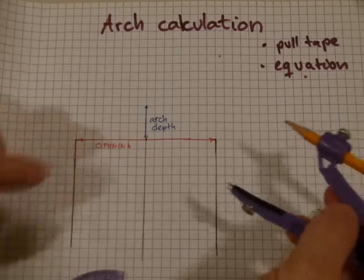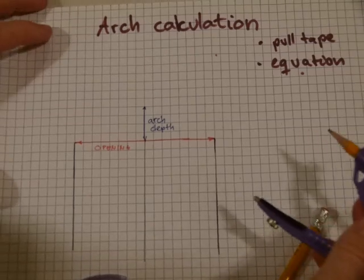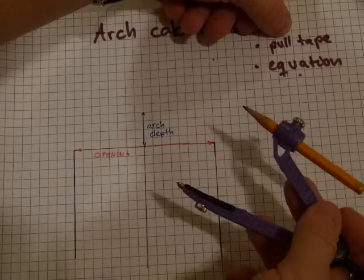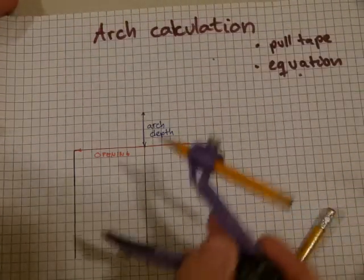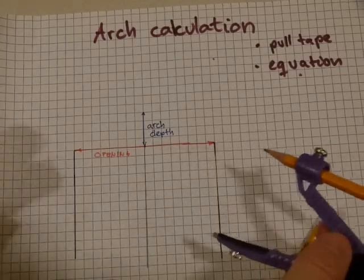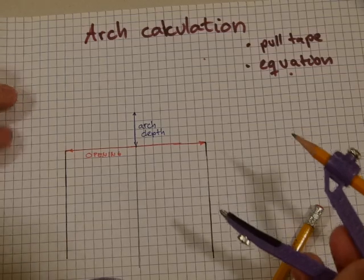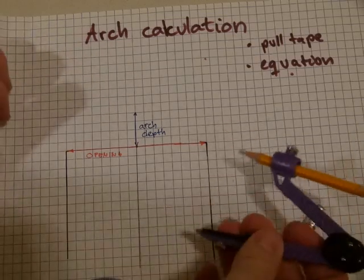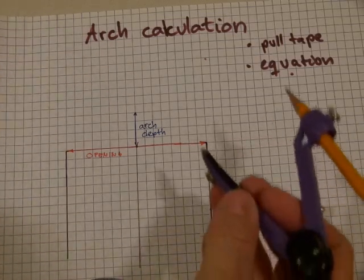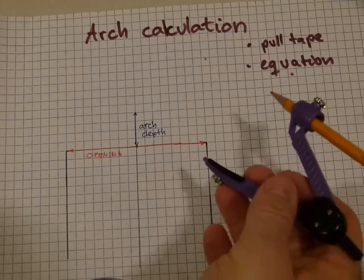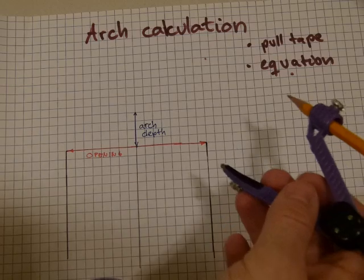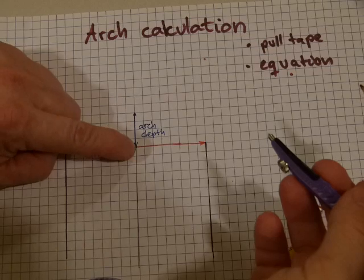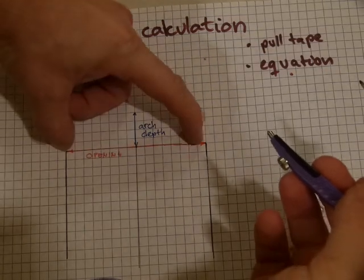The circle will be somewhere on it, and I'll show you two ways to find it. One is by pulling the tape, which I'm going to illustrate with this compass. Then I have a setup to show you with a real 40-inch wide opening and two equations. I'm going to walk you through the geometry step by step. It can be approximated without doing the math by pulling the tape. One more thing: what is critical for the layout is that the depth of the arch be exactly in the middle of this opening at the top.